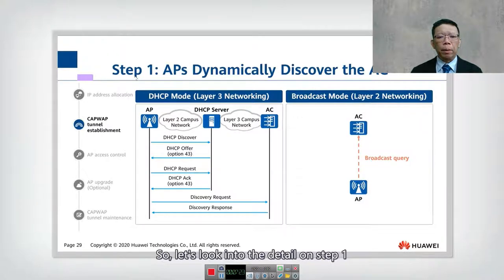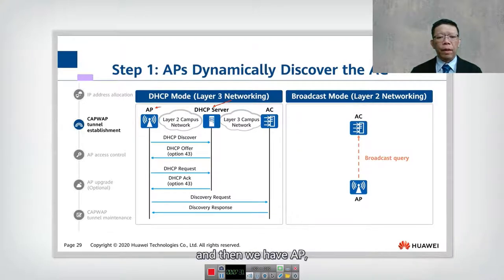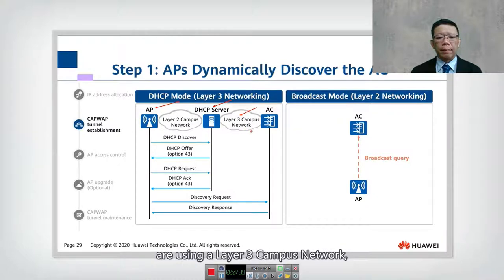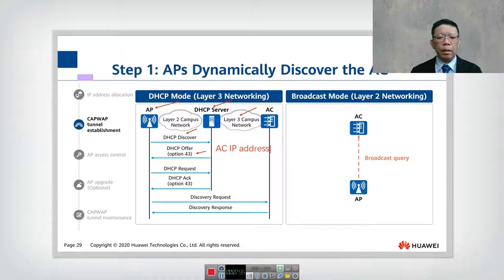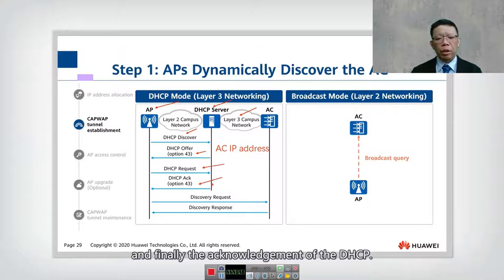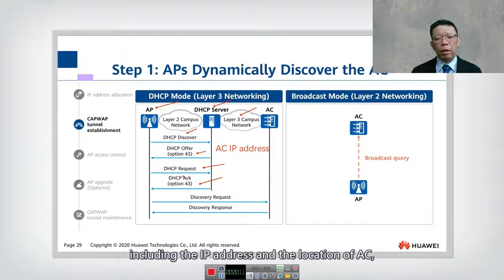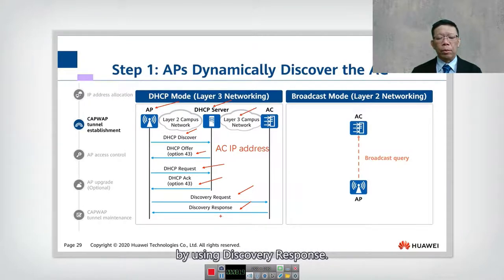In detail, for dynamic AC discovery: the AP and DHCP server are on the same network, using a Layer 3 campus network. The AP performs a DHCP Discover as usual, but the DHCP Offer includes Option 43, which contains the AC's IP address — configured on the DHCP server. After the AP completes the DHCP process and receives its IP address and the AC location via Option 43, the AP sends a discovery request and the AC responds with a discovery response.